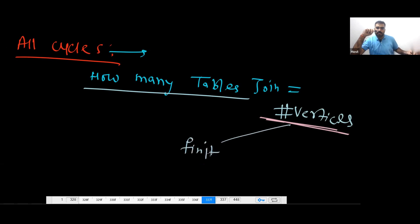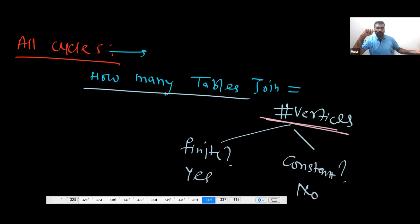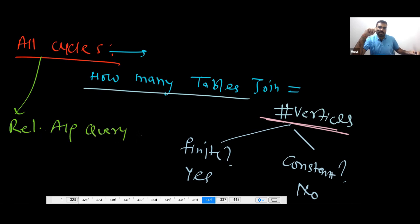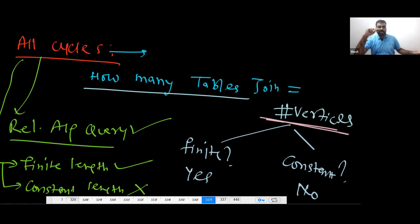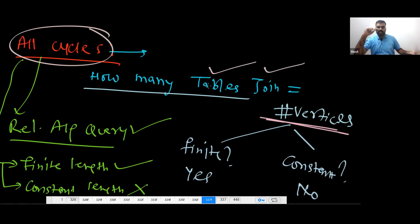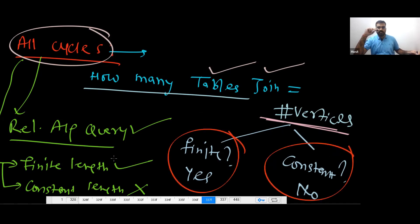So you can write a relational algebra query of finite length for reachability, but you cannot write one of constant length. The number of joins depends on the graph size, which is not a fixed constant.